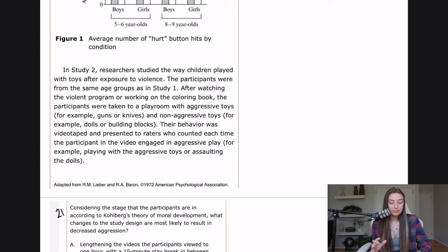In study two, researchers studied the way children played with toys after exposure to violence. The participants were from the same age groups as in study one. After watching the violent program or working on the coloring book, the participants were taken to a playroom with aggressive toys, for example, guns or knives, and non-aggressive toys, for example, dolls or building blocks. Their behavior was videotaped and presented to raters who counted each time the participant in the video engaged in aggressive play, for example, playing with aggressive toys or assaulting the dolls. It does not tell us the results of this experiment. So likely if we get a question on this, it's probably going to be about experimental method rather than the results.